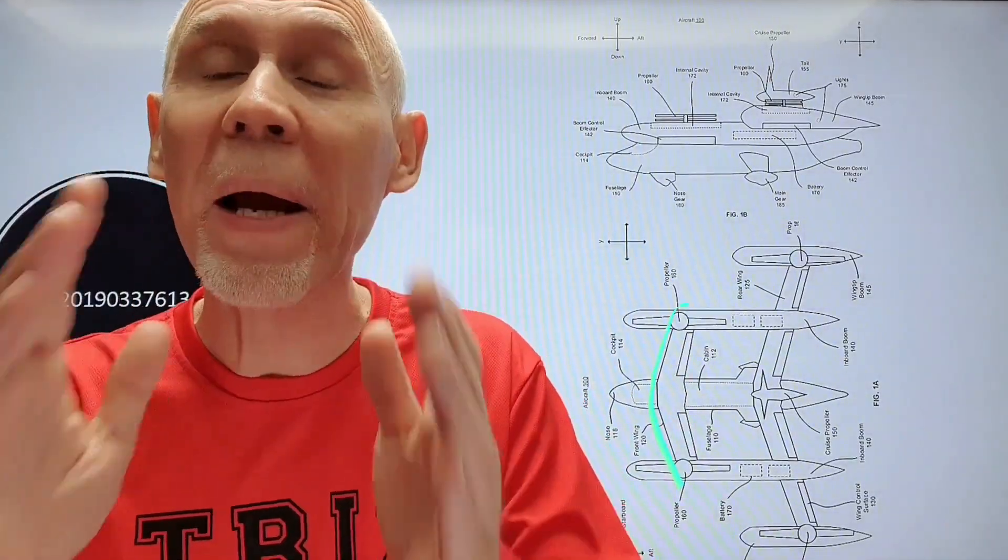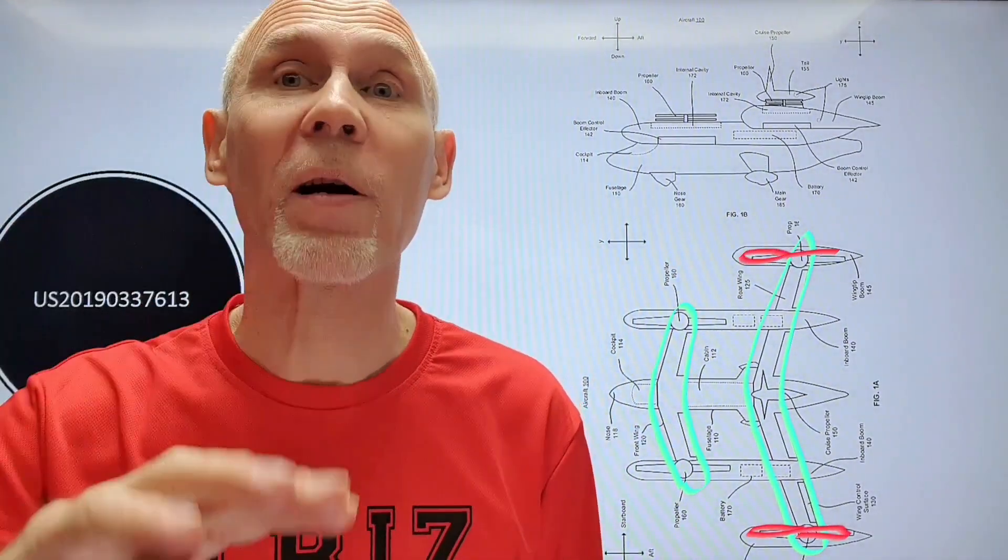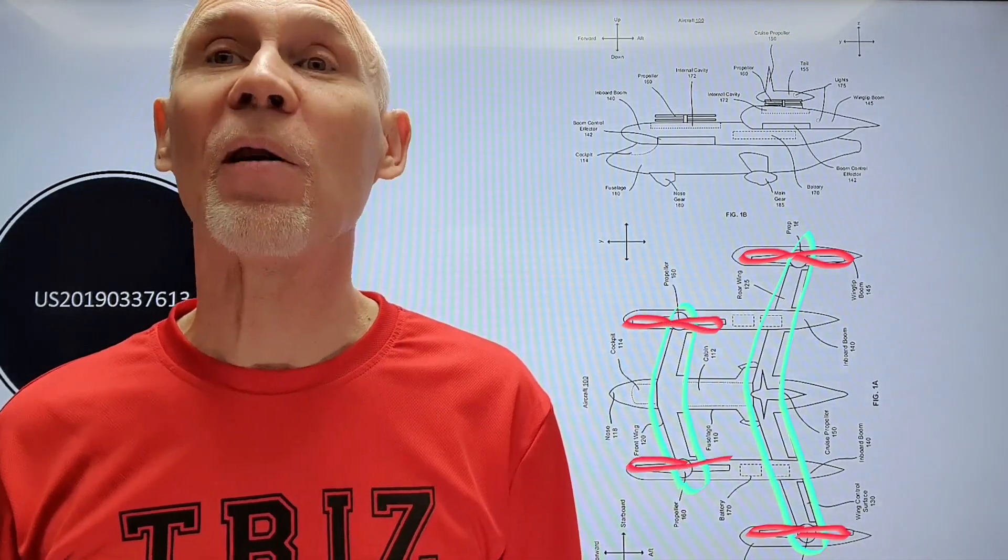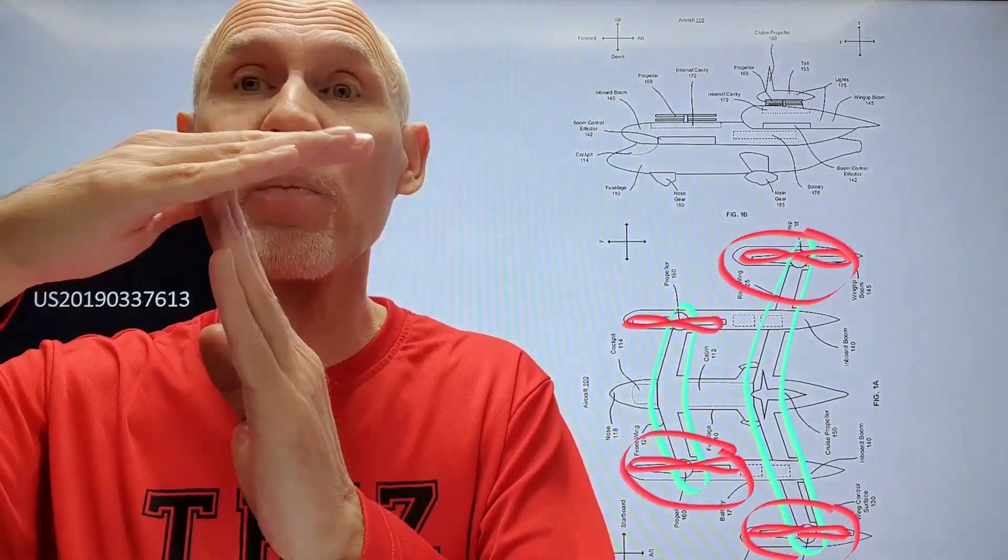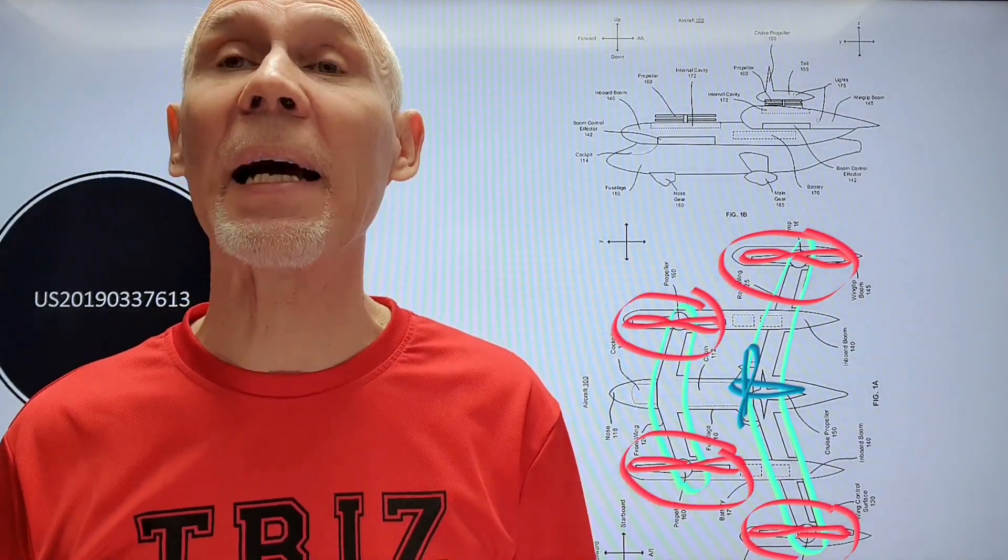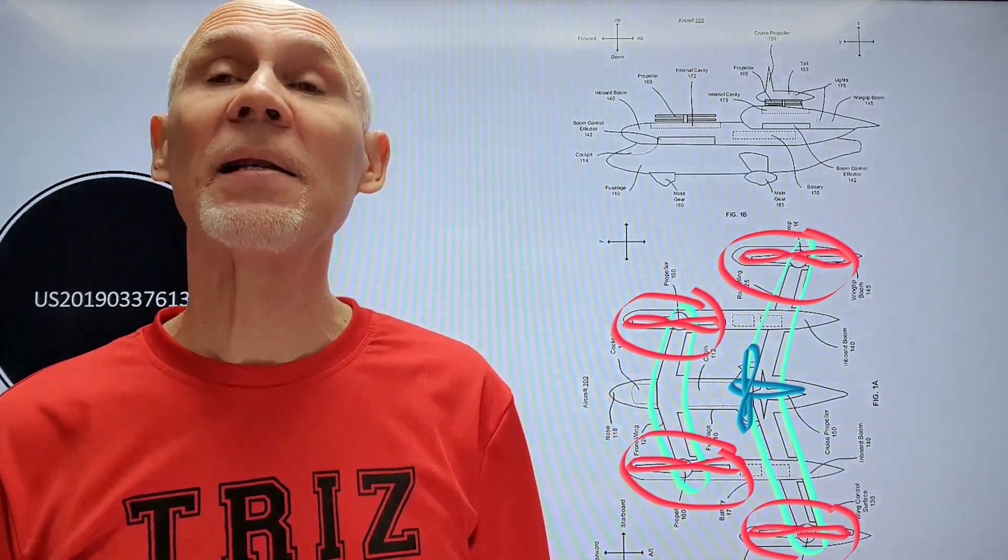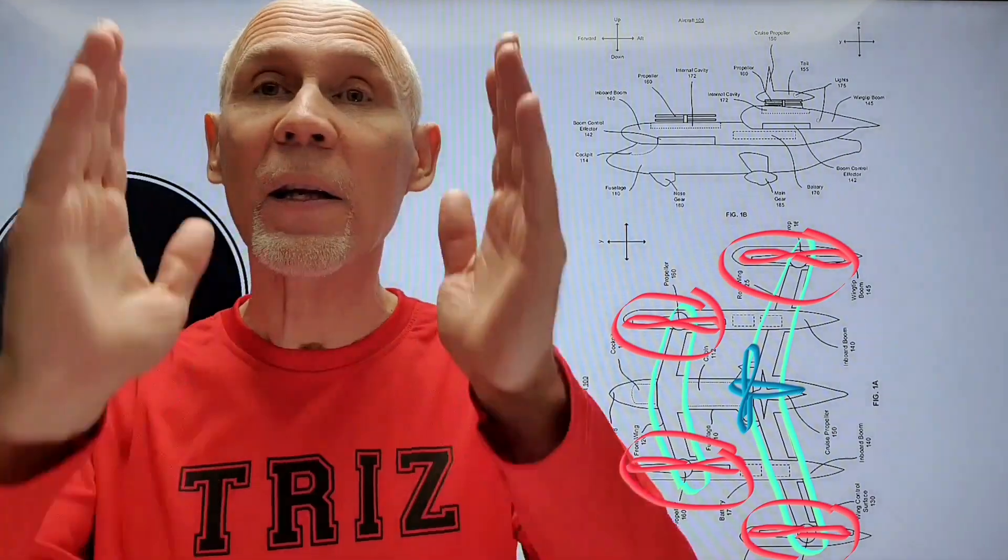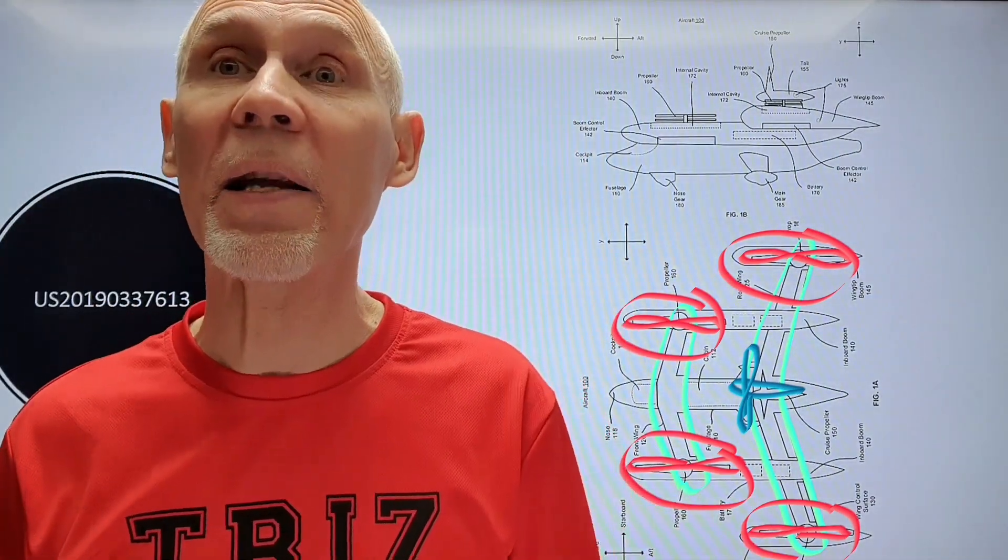And there is another patent application describing a different aircraft, and this concept has not two but four wings. There are also four double helicopter blades installed similarly as in the first concept, and these drone-like propellers will take care of vertical takeoff and landing. But the problem of their aerodynamic drag during horizontal flight was solved differently.